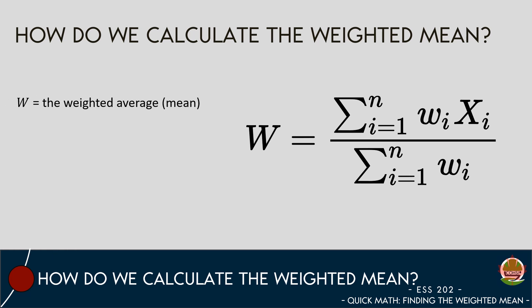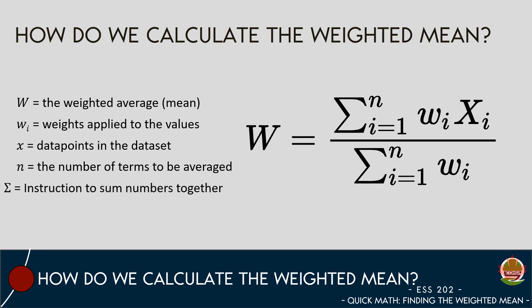The uppercase W is what we are trying to find, the weighted mean. The lowercase w is the weights that are applied to each data point in the data set. The letter X represents data points in the data set, and the letter N represents how many data points are in the data set. The Greek letter sigma is telling us we need to sum our values together.